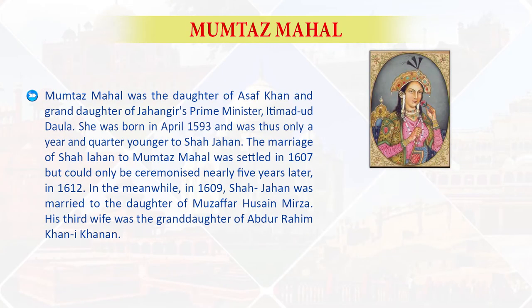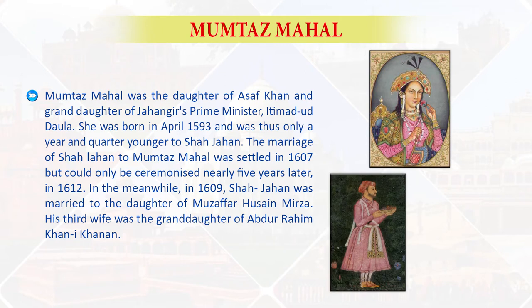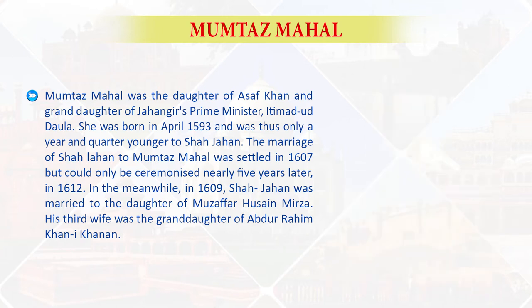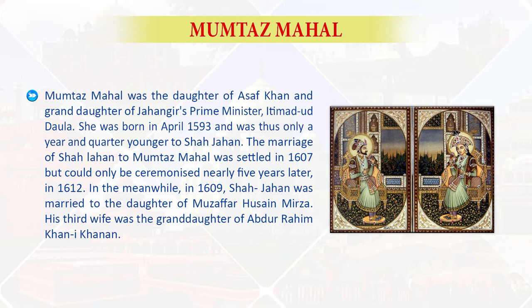Next is the genesis and the execution of the scheme. Taj Mahal is the mausoleum built by Shah Jahan to commemorate his second wife Mumtaz Mahal. Mumtaz Mahal was the daughter of Asaf Khan and the granddaughter of Jahangir's Prime Minister Itimad-ud-Daula. She was born in April 1593 and was thus only a year and a quarter younger than Shah Jahan. The marriage of Shah Jahan to Mumtaz Mahal was settled in 1607 but could only be solemnized nearly five years later in 1612.